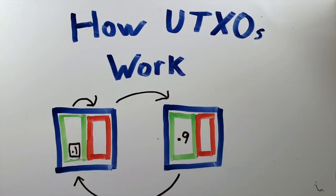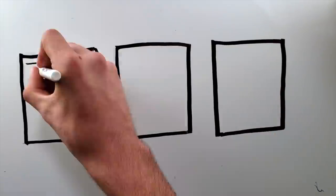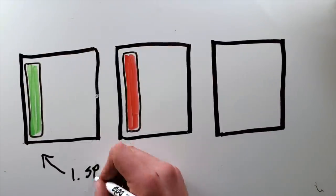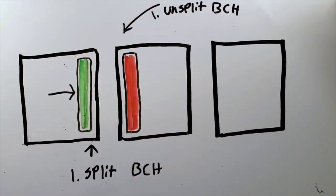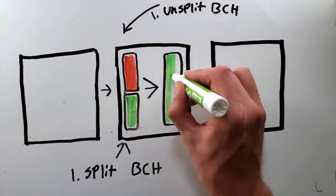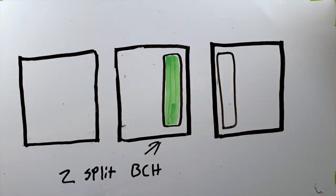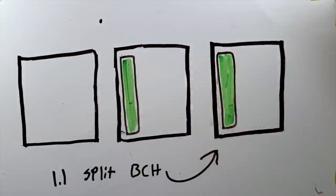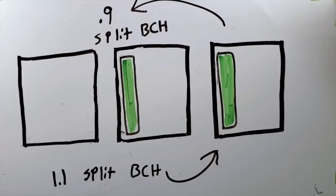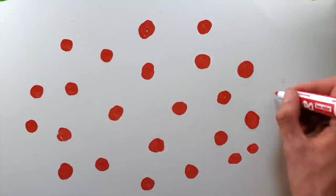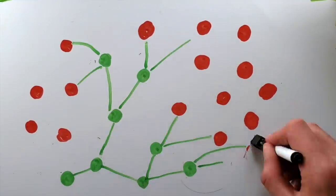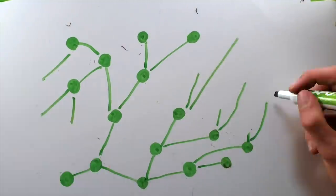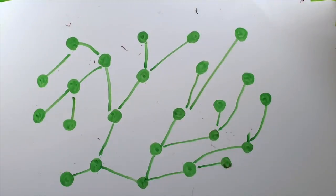Now, when an unsplit input is combined with an input that is split, the output becomes valid only on the split chain, and is no longer replayable. So when split coins are introduced into the money supply, all of the unsplit coins that they touch then become split. So in the very beginning, at the point of the split, all transactions are replayable. But the very nature of the replay is to break down rapidly from the very beginning, and eventually severs ties completely.